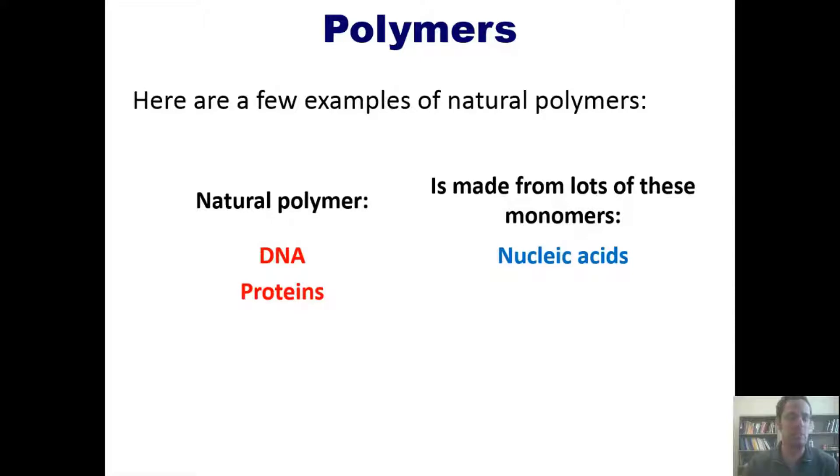Proteins are made of building blocks or monomers called amino acids, starch is made from smaller building blocks or monomers called glucose, and cellulose is made from smaller building blocks that is also glucose, just bound together in different ways. These are only a few of many examples of natural polymers.